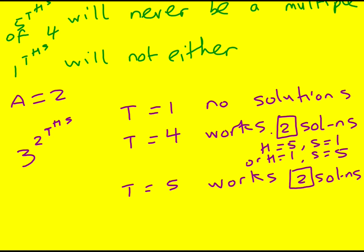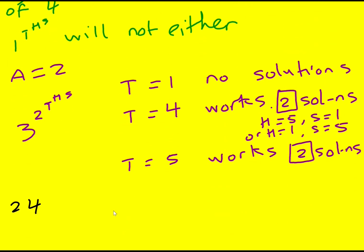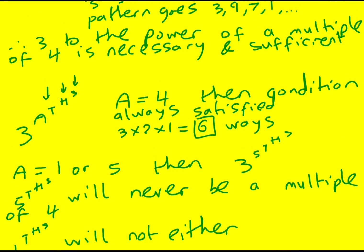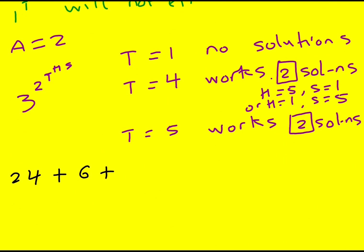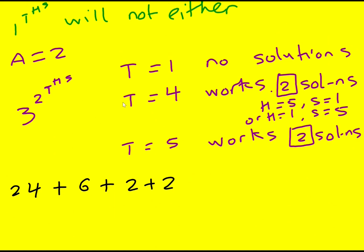And therefore, overall we've got our 24 solutions from M equals 1 plus our 6 solutions from when M was equal to 3 and A was equal to 4. And then we've got these other 4 solutions for when M is 3 and A is 2. Giving us a total of 34 possible arrangements.